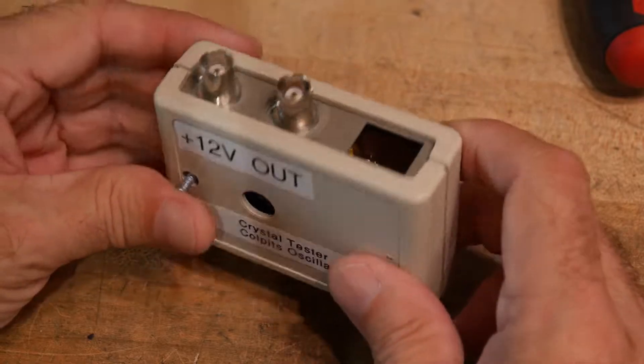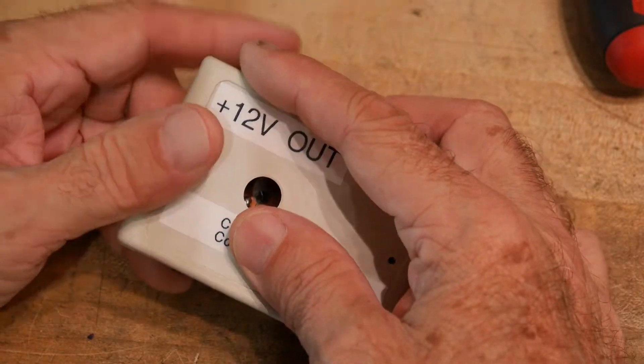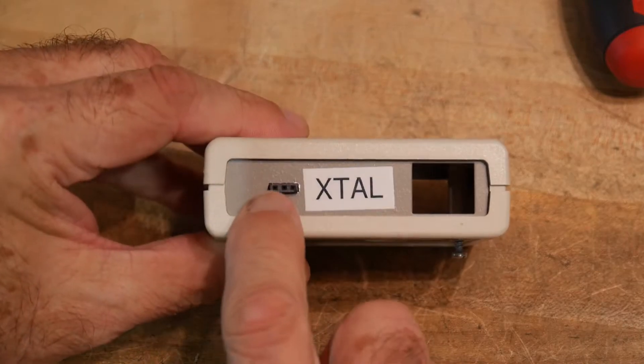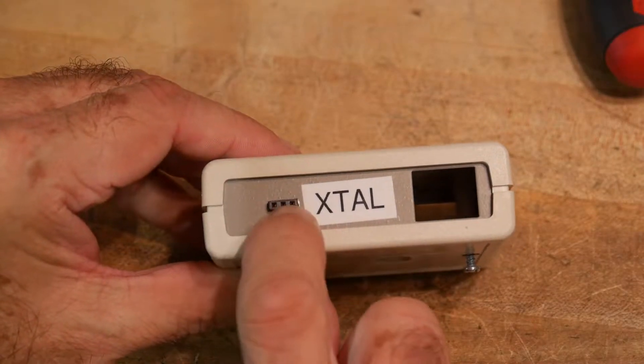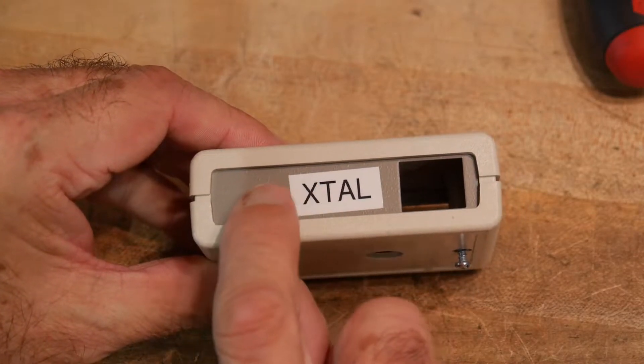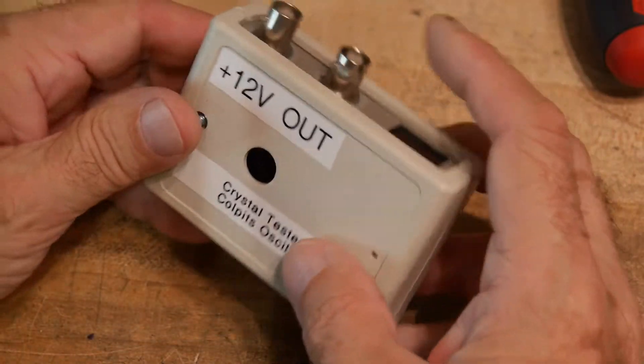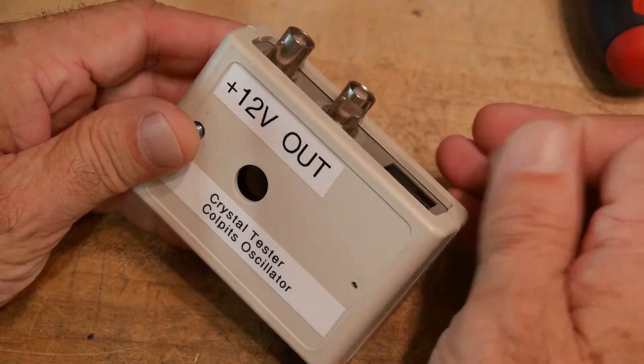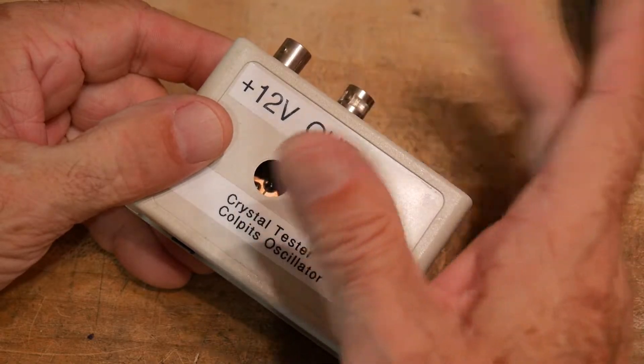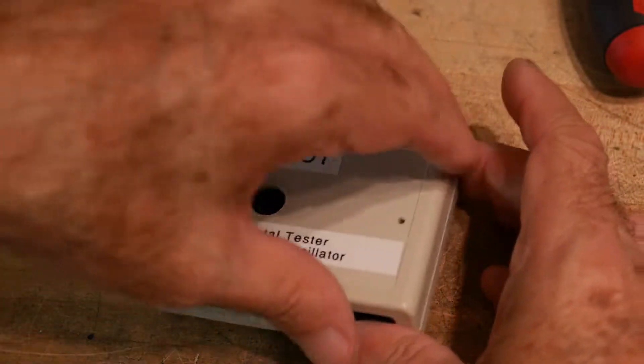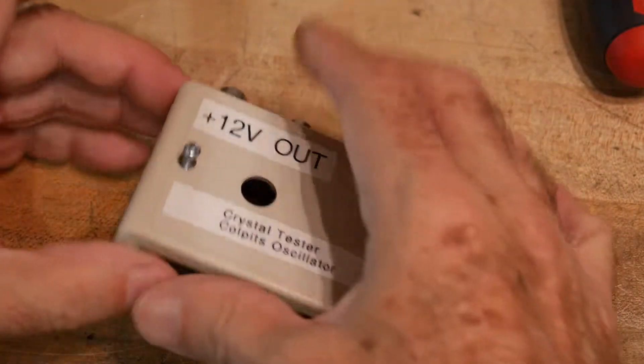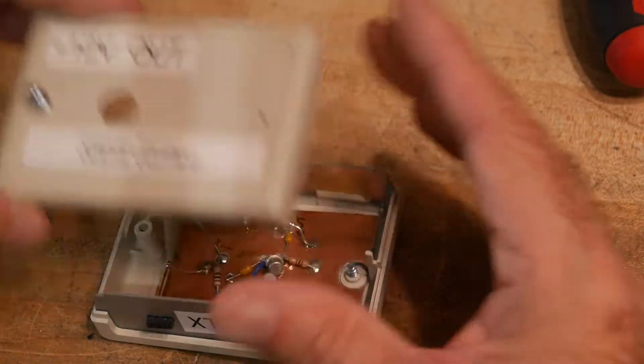Basically you apply 12 volts. The crystal fits on this little socket right here and the oscillating signal comes on the output, so you hook that up to your frequency counter. I've already loosened the screws on this, so let's open it up.